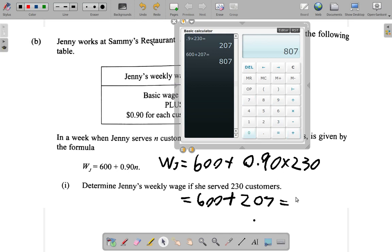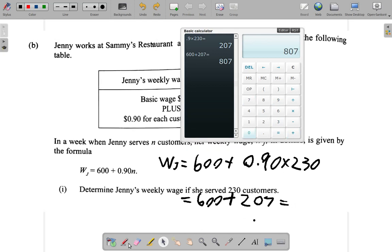So I have here $807. That's her weekly wage, $807, and you can put the .00 to show zero cents.